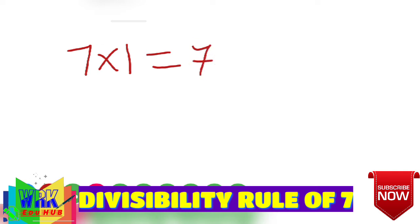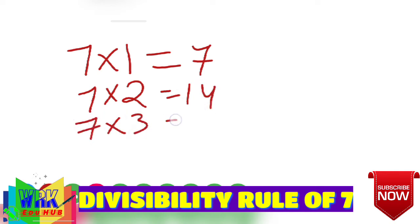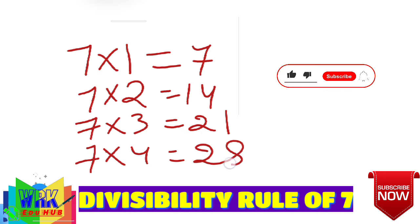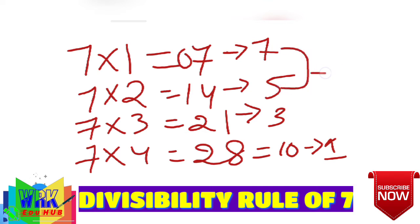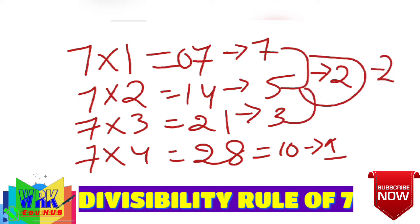See here: seven ones are 7, seven twos are 14, seven threes are 21, seven fours are 28. Taking digit sums: 0+7=7, 1+4=5, 2+1=3, 2+8=10 → 1. Now observe: 7 minus 5 is 2, 5 minus 3 is 2, or 3 minus 5 is minus 2. The variation is always minus 2 — this is very important.